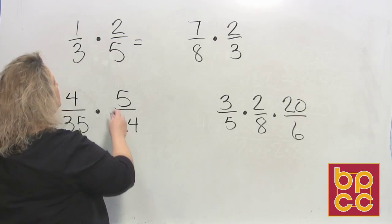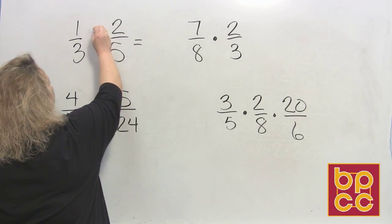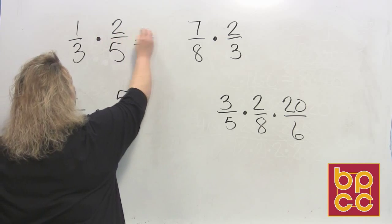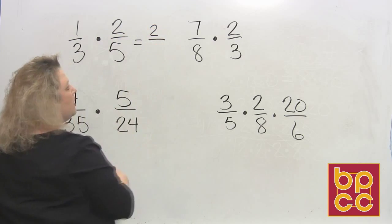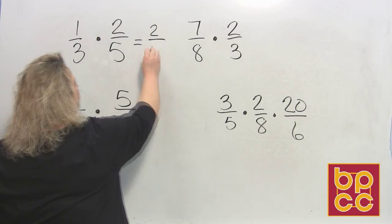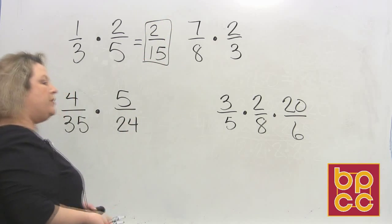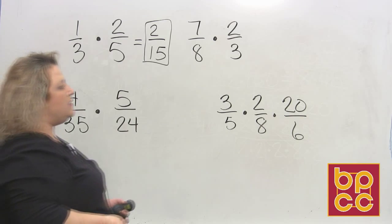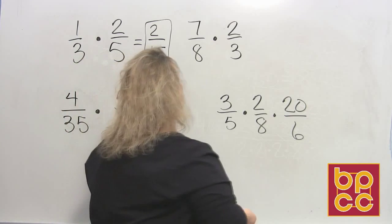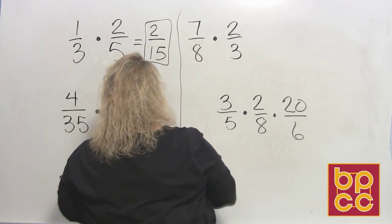So when that happens, you have no other choice but to do the little song. Multiplying fractions is no problem. Top times top, so that'd be one times two is two, and bottom times bottom, three times five is fifteen. When you can't reduce it, two over fifteen, that is in lowest terms and that's all you can do to that one. Let's go to the next one.